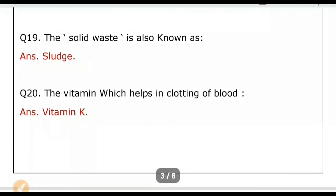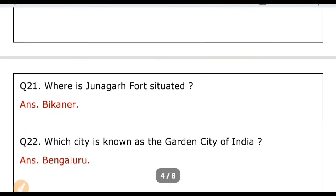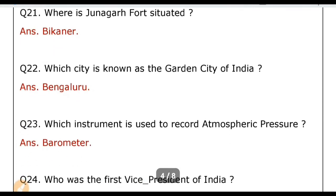Which vitamin helps in clotting of blood? Answer: Vitamin K. Where is Junagarh Fort situated? Answer: Bikaner. Which city is known as the Garden City of India? Answer: Bengaluru. Which instrument is used to record atmospheric pressure? Answer: Barometer.